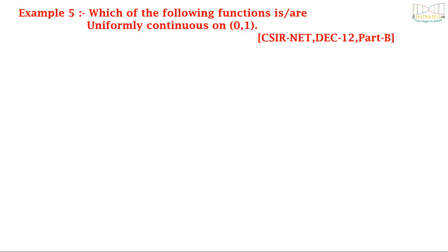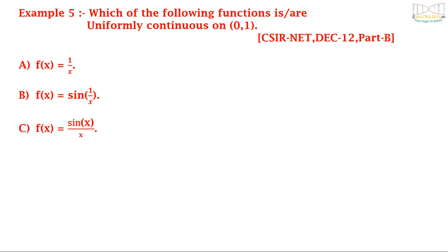Example 5: Which of the following functions is or are uniformly continuous on (0,1)? The options are: A, f(x) = 1/x; B, f(x) = sin(1/x); C, f(x) = sin(x)/x; and D, f(x) = cos(x)/x. This question was asked in CSIR NET December 2012 Part B.